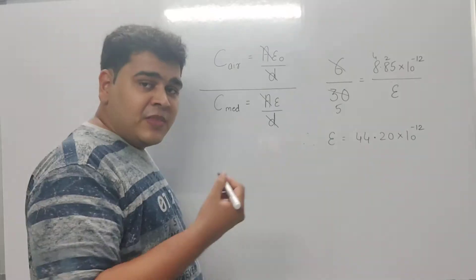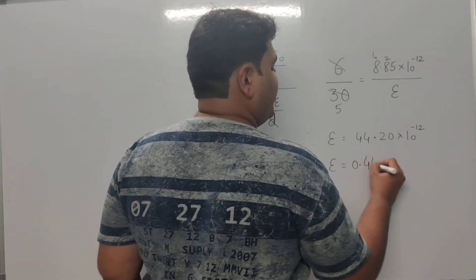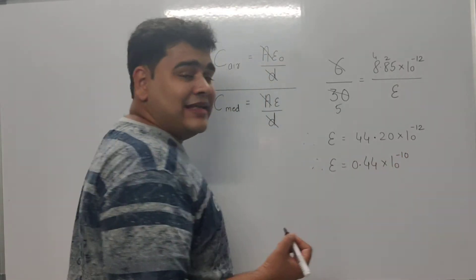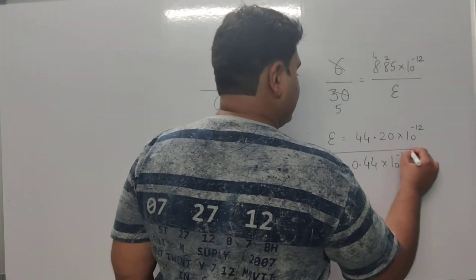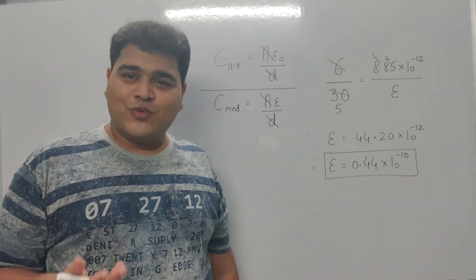Rearranging, we can write epsilon as 0.44 × 10^-10 as the final answer. I hope this is quite clear and easy for you.